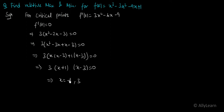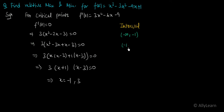Now to determine whether -1 and 3 are relative maxima or relative minima, we need to form intervals. The intervals will be: (-∞, -1), (-1, 3), and (3, +∞) — that is, less than -1, between -1 and 3, and greater than 3.